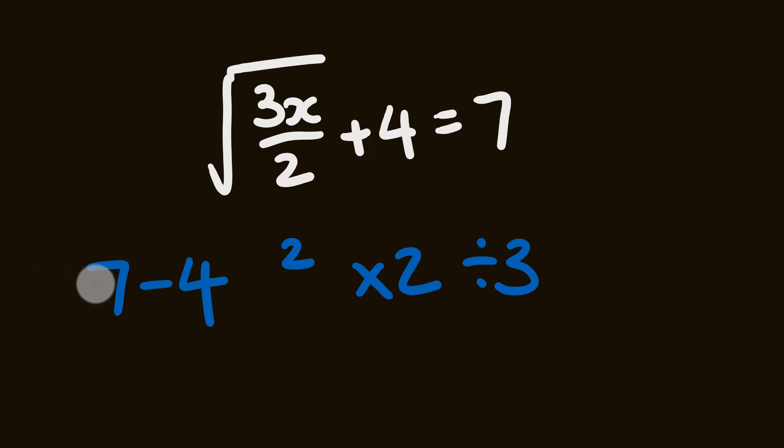So what about we do this? We have 7 minus 4. 7 minus 4 is 3. 3 squared is 9. 9 times 2 is 18. 18 divided by 3 we have that x is equal to 6. Now this might be one we want to check. Let's have a look. 3 times 6 is 18 divided by 2 is 9. The square root of 9 is 3 plus 4 is 7. Happy days. And that's how you do this.